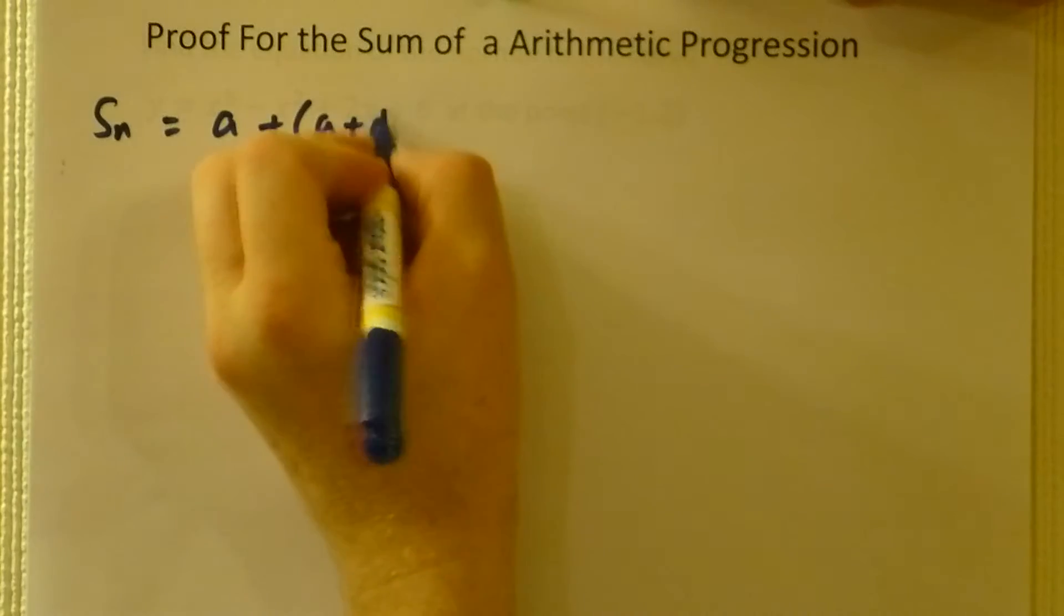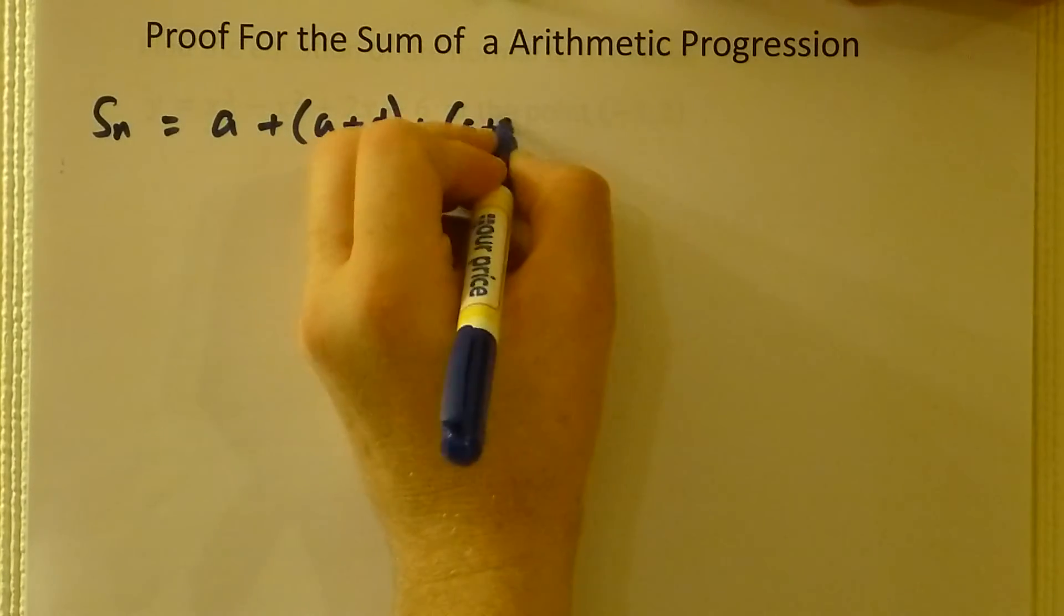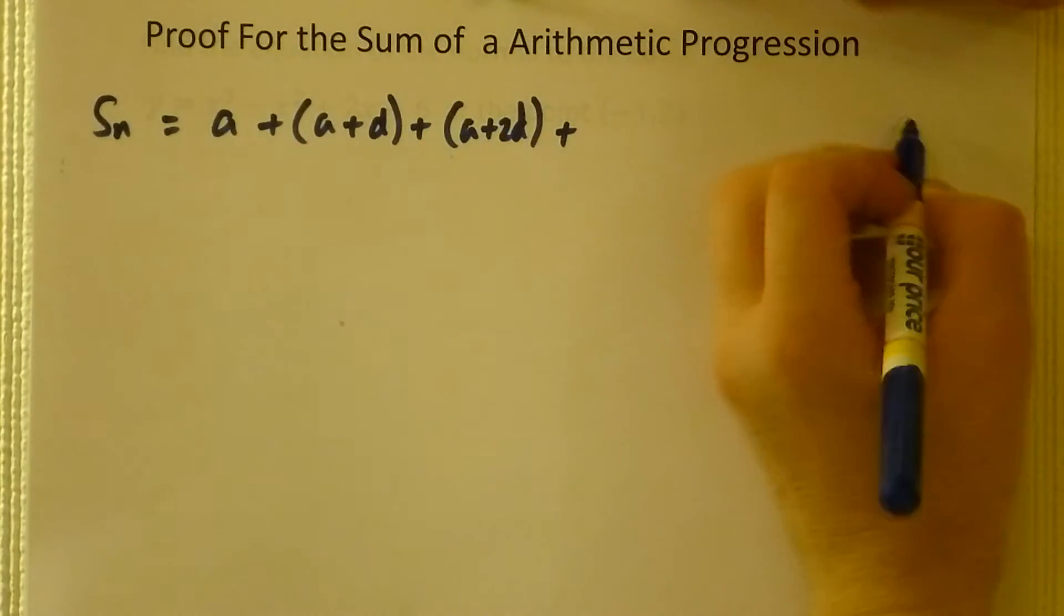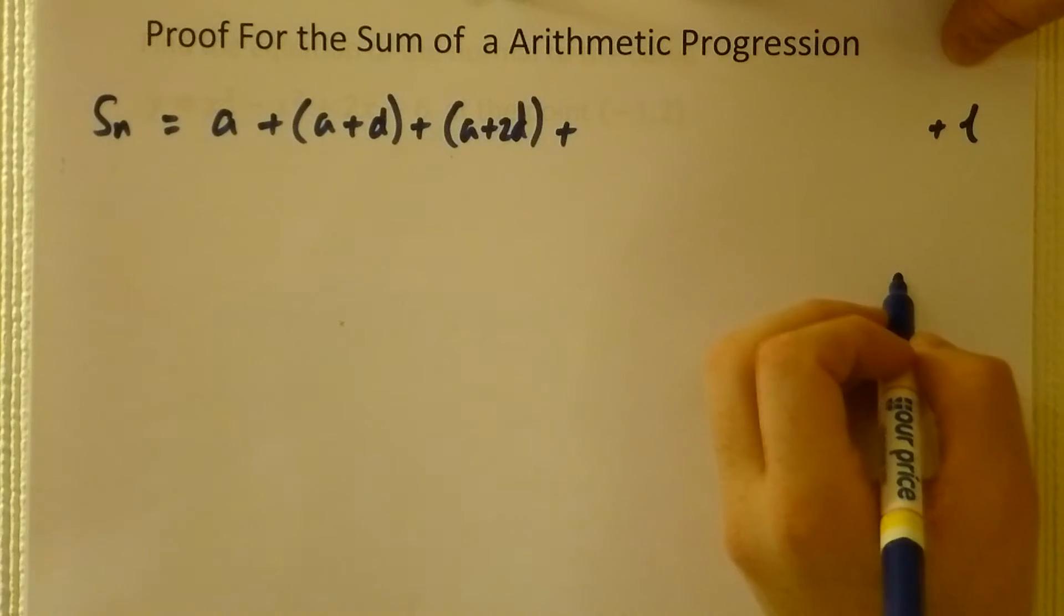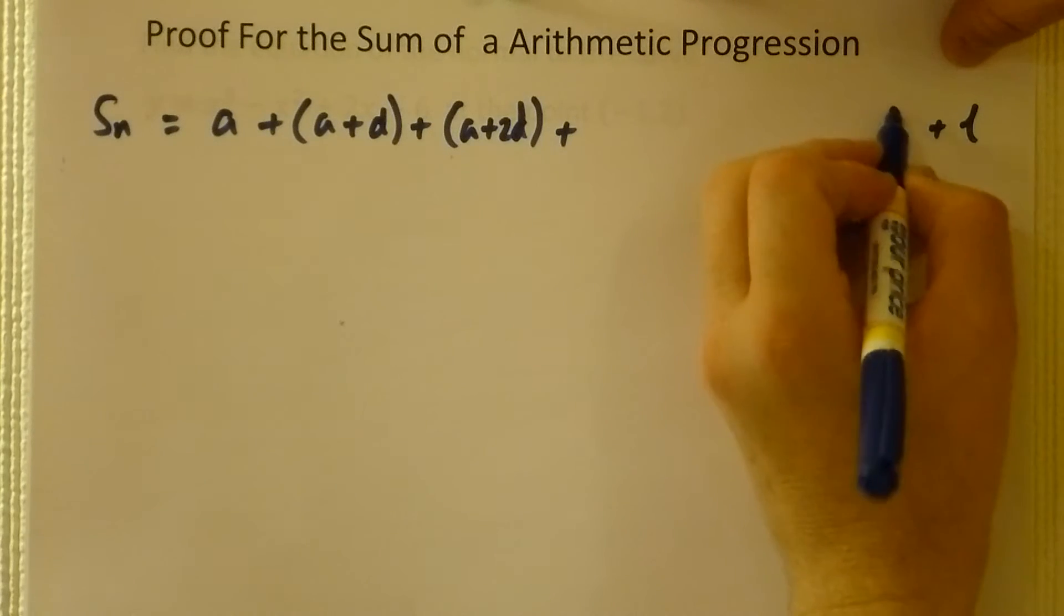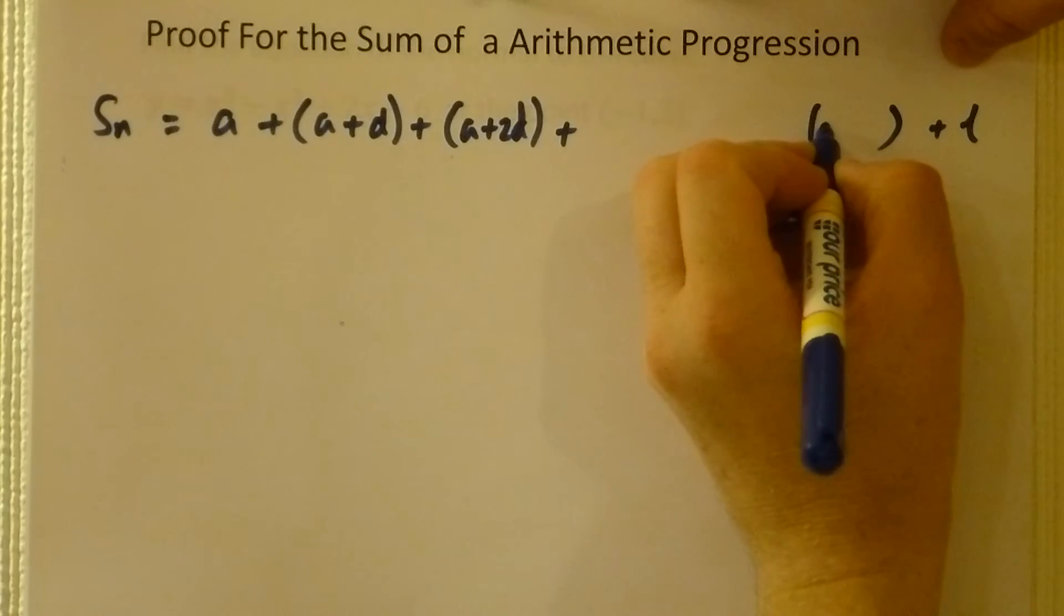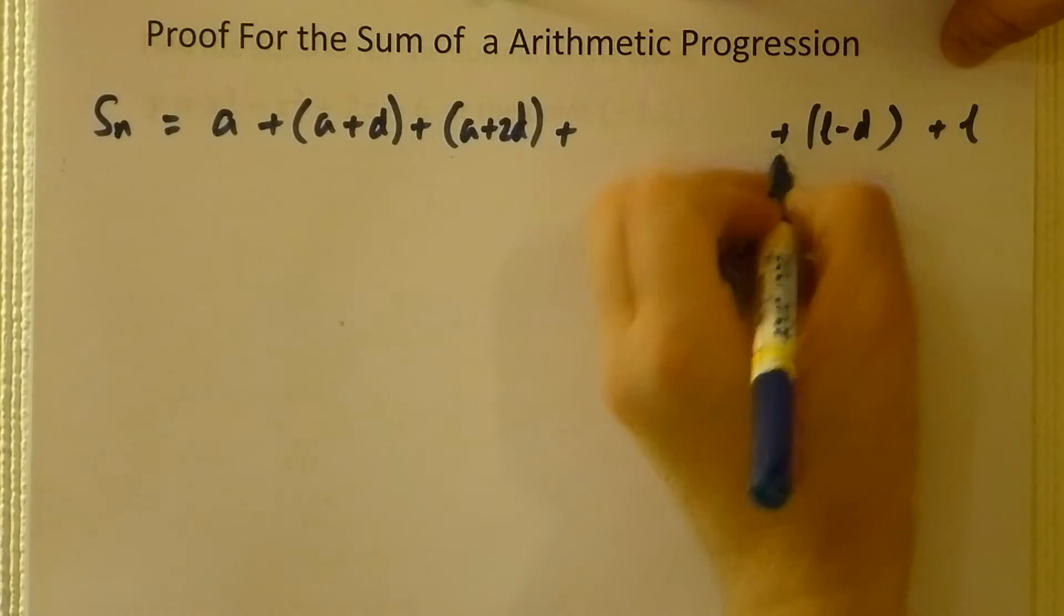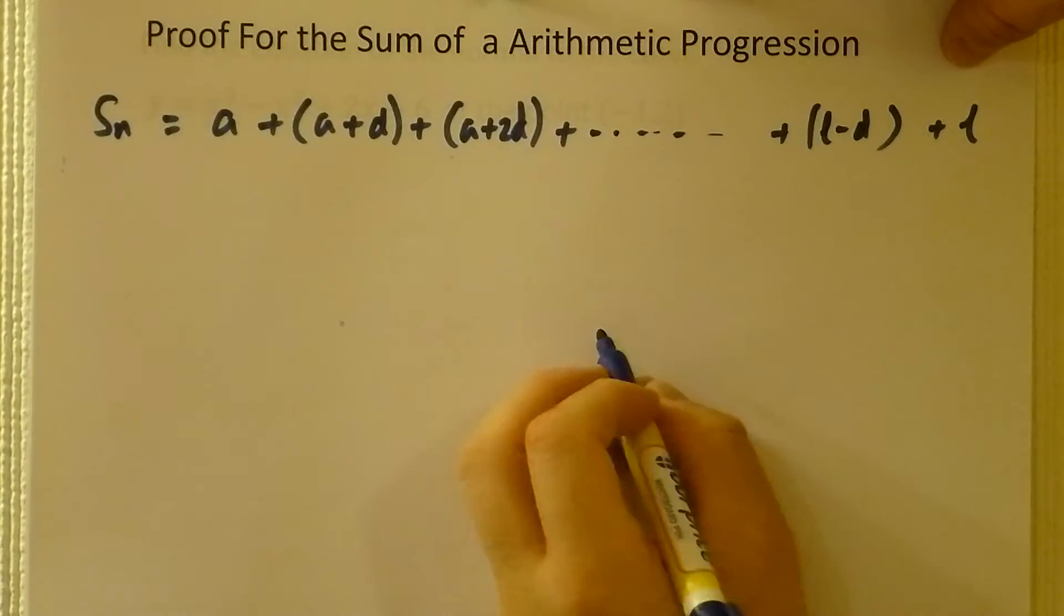To work out the sum of an arithmetic progression, the sum of n terms would be a, a plus d, a plus 2d, all the way up to the last term. The term before the last term would be the last term minus d, and all these terms in between.